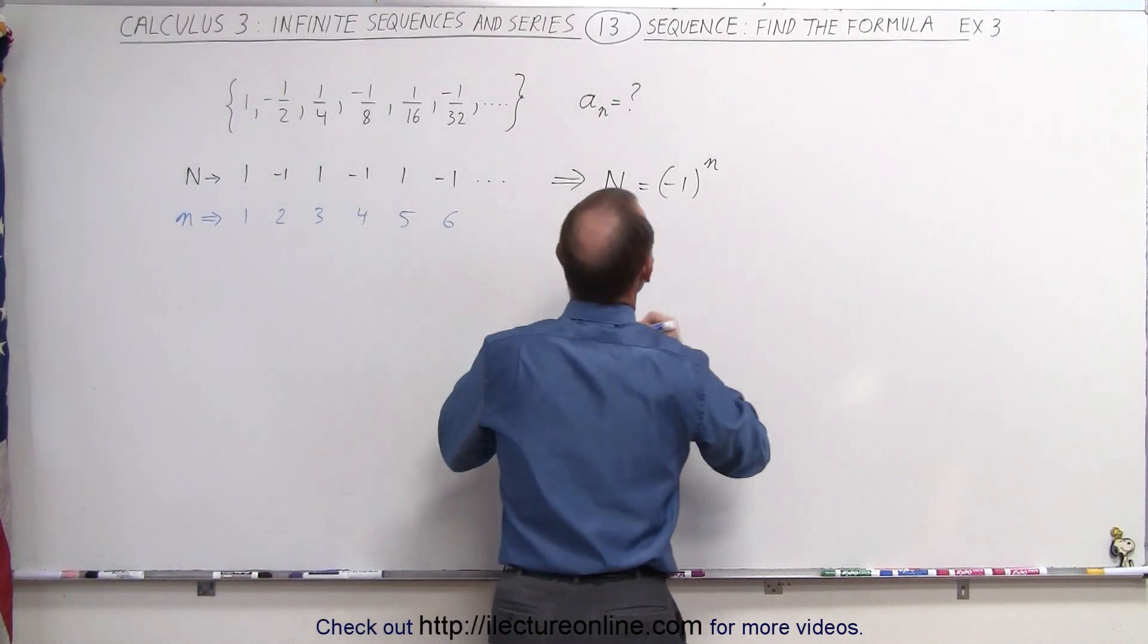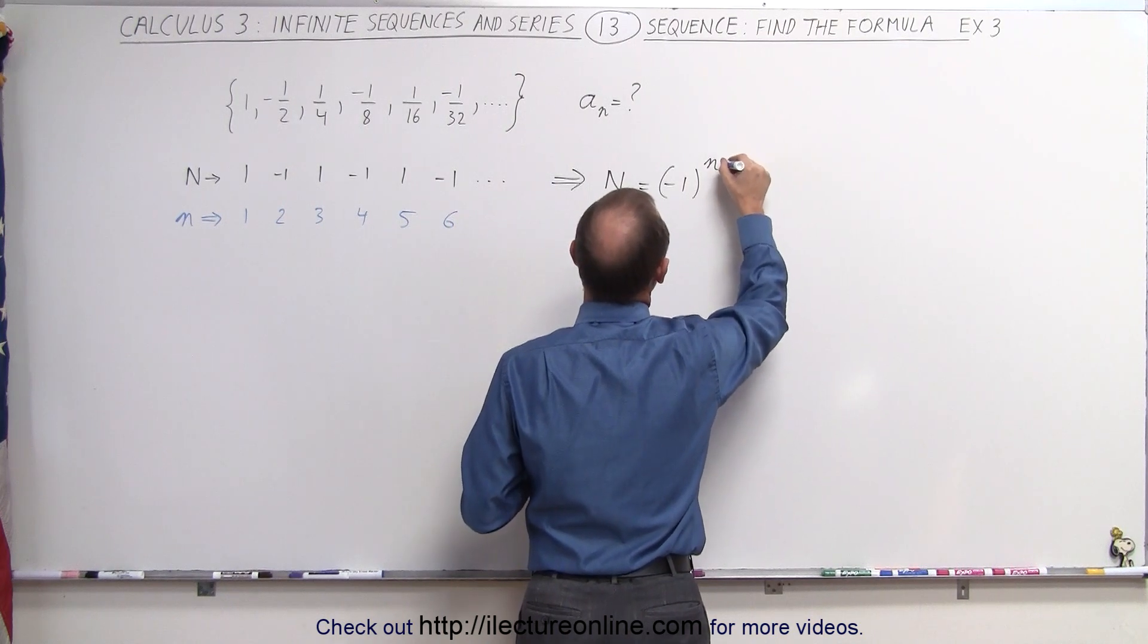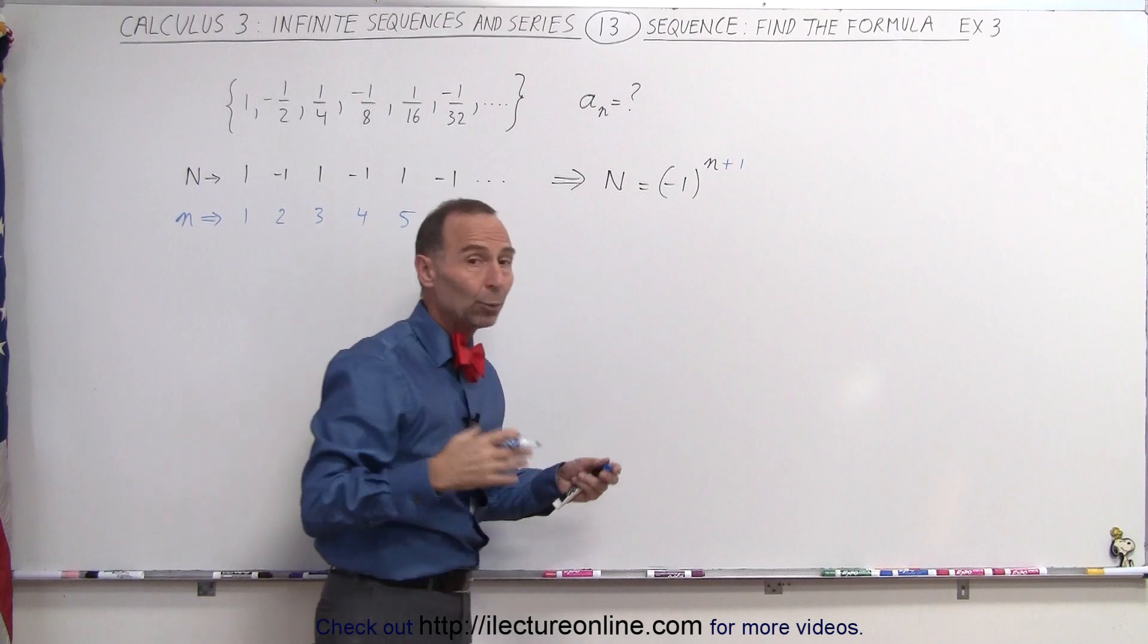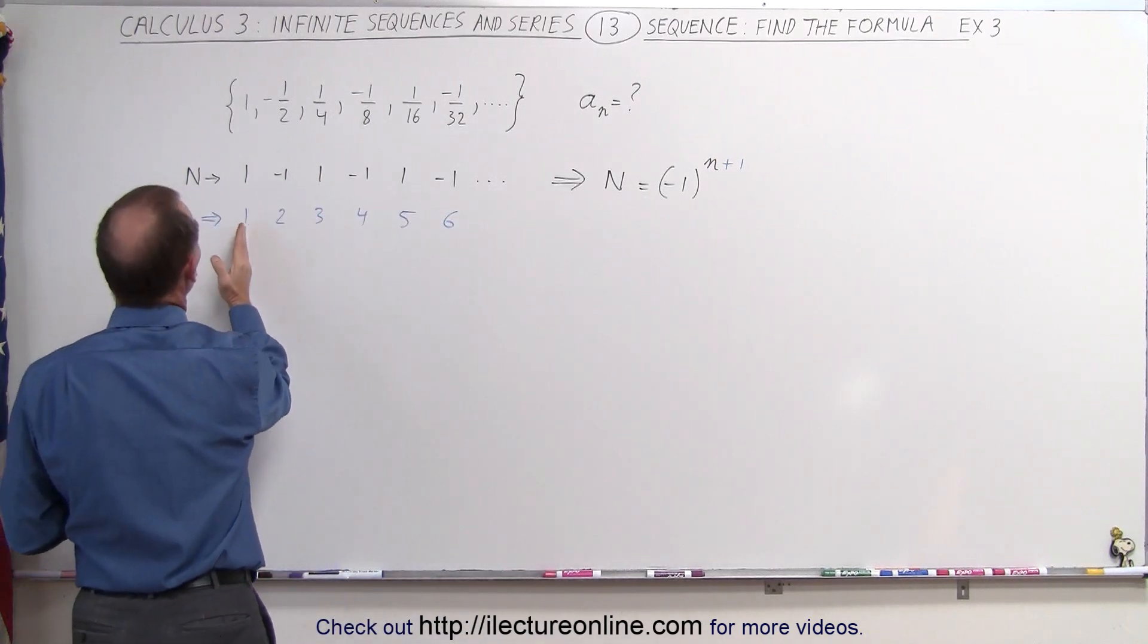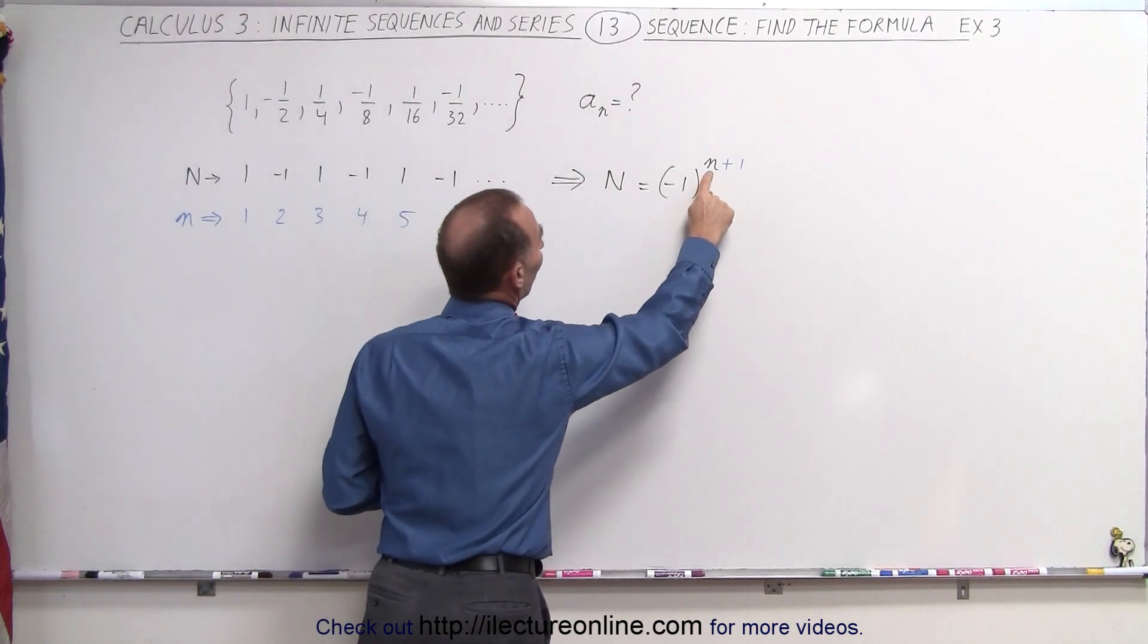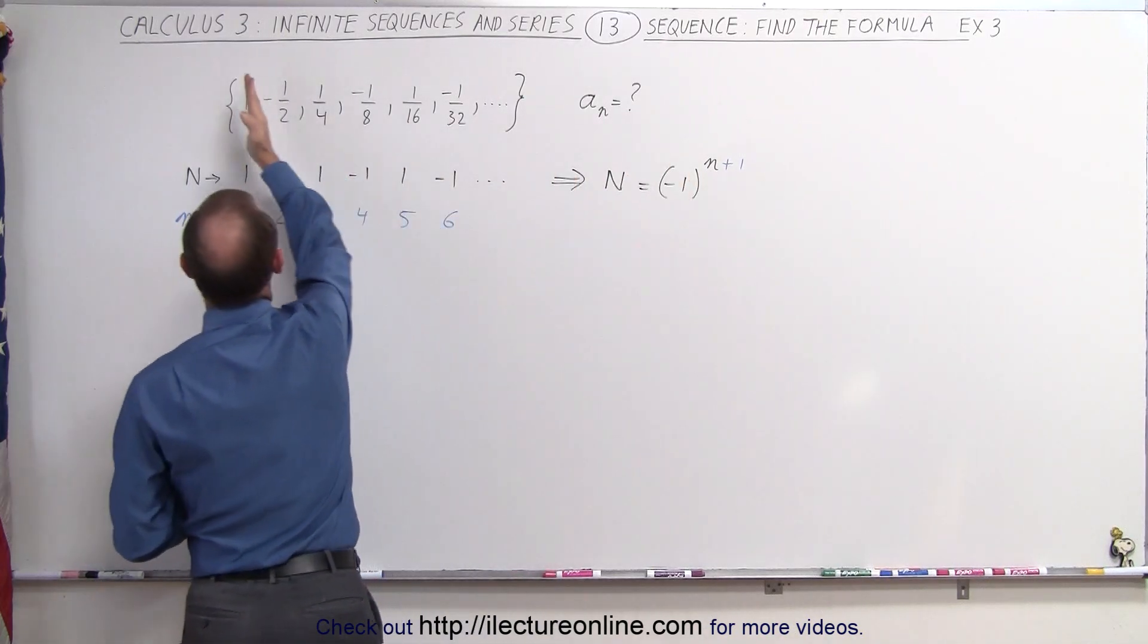So instead, what we're going to need to do is we'll either add one or subtract one from it. It doesn't matter. So we'll just go ahead and add one to the exponent. So now we can see that when n is equal to one, we have one plus one, which is two. Negative one squared gives us a positive one.